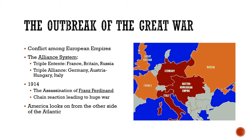One thing that happens is they start to develop alliances — essentially teams where everybody on that team promises to back the other guys up if they ever get sucked into a war. Europe is split into two alliances. One alliance is called the Triple Entente, the orange countries on the map. That consists of France, Britain, and Russia.